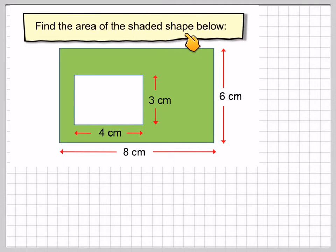Find the area of the shaded shape below. Here we have a rectangle with a gap in the middle. We're going to call the big rectangle A and the small rectangle B.